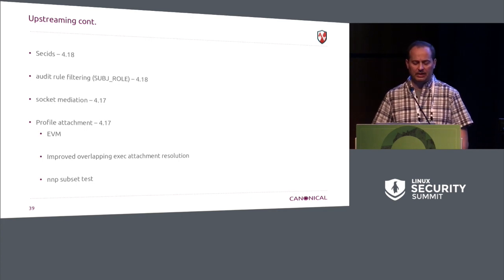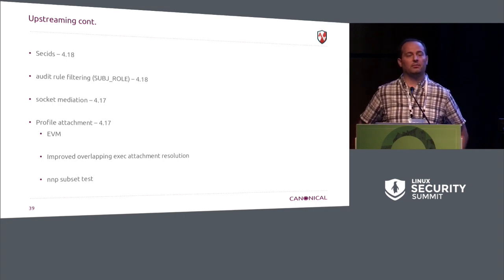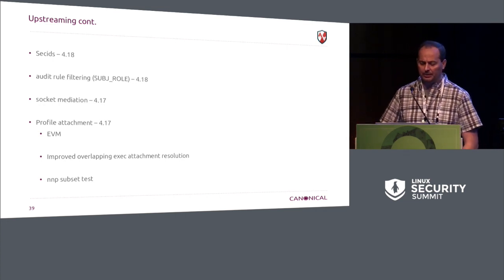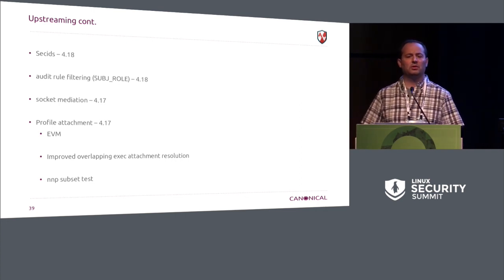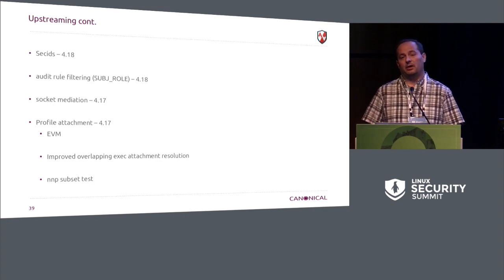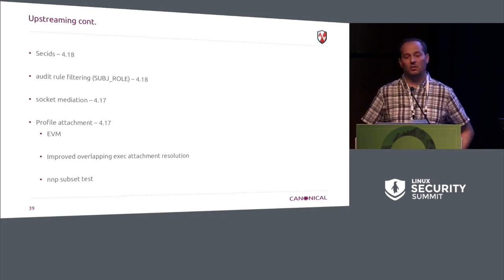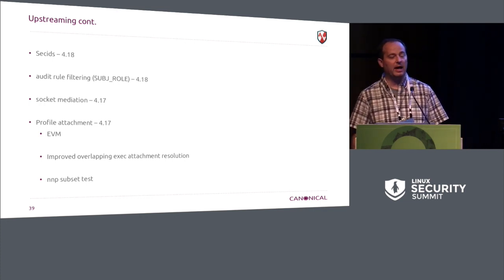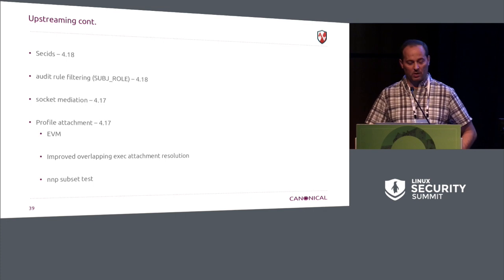Landing secIDs has also allowed us to land support for audit rule filtering. Now audit can do audit rules based on the AppArmor task label or domain label. We landed socket mediation — coarse-grained control of sockets. It's not fine-grained IPv4 control, but things like not allowing IPv6 or AF_PACKET sockets — that kind of level. It's better than nothing, but it's not where we're going to be. We're working on the fine-grained stuff right now.